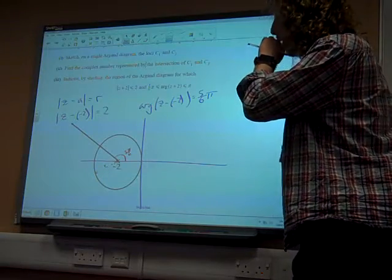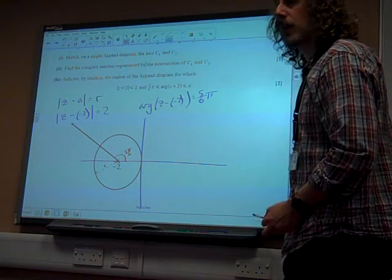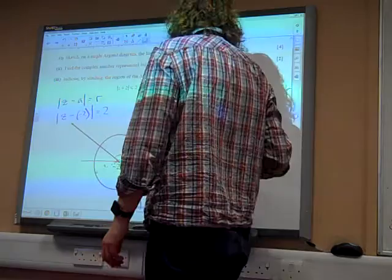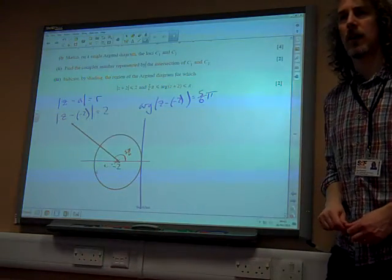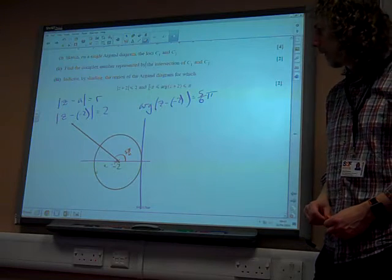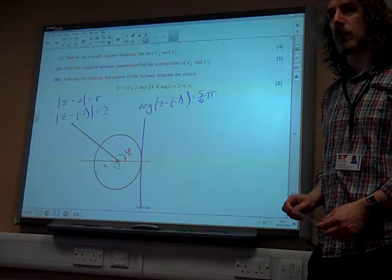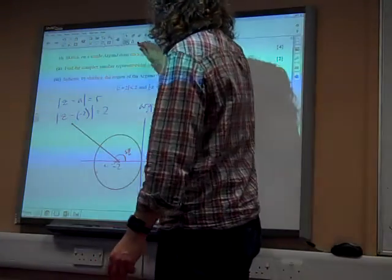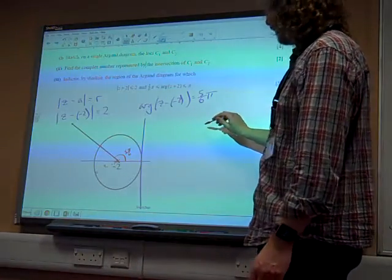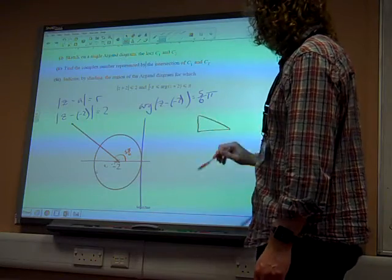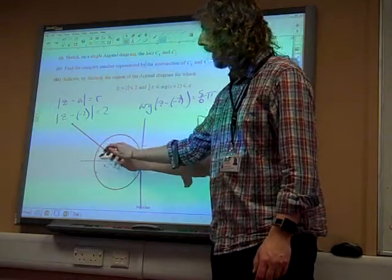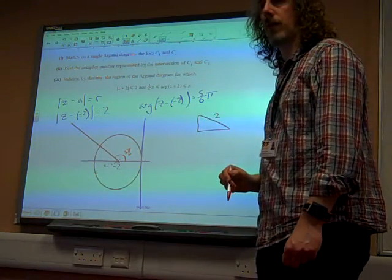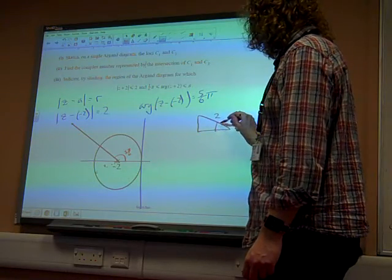Now, two marks now. Find the complex number represented by the intersection of C1 and C2. A lot of you just kind of didn't get started on this, really. If you hadn't got the diagram right, then you were struggling. So I think what we're thinking about here is that here we've got a little triangle, haven't we? This is a snapshot of that bit there. We're in that little triangle. That distance is 2 because the radius of our circle is 2. That angle is π by 6.